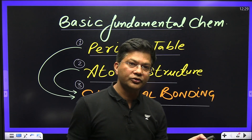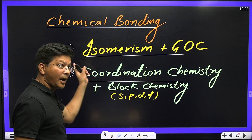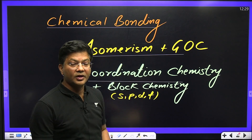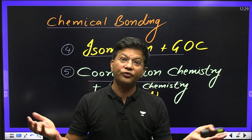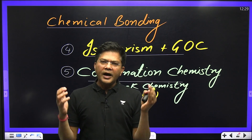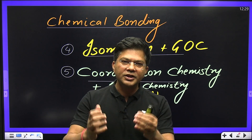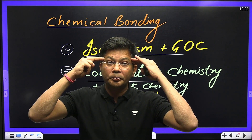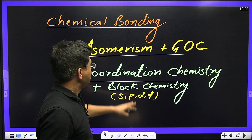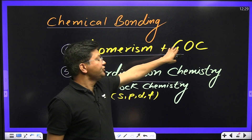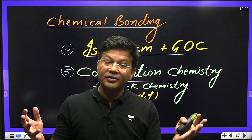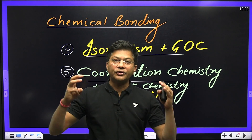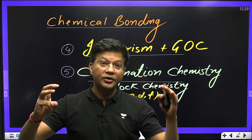Now after these three chapters, chemical bonding — the third one — is going to give you very good command on isomerism. Whether I talk about isomerism of organic chemistry or isomerism of coordination chemistry, you will get very good visualization. And with the help of chemical bonding, GOC — general organic chemistry — that is inductive effect, hyperconjugation, resonance — these three things you will definitely be able to understand in depth.